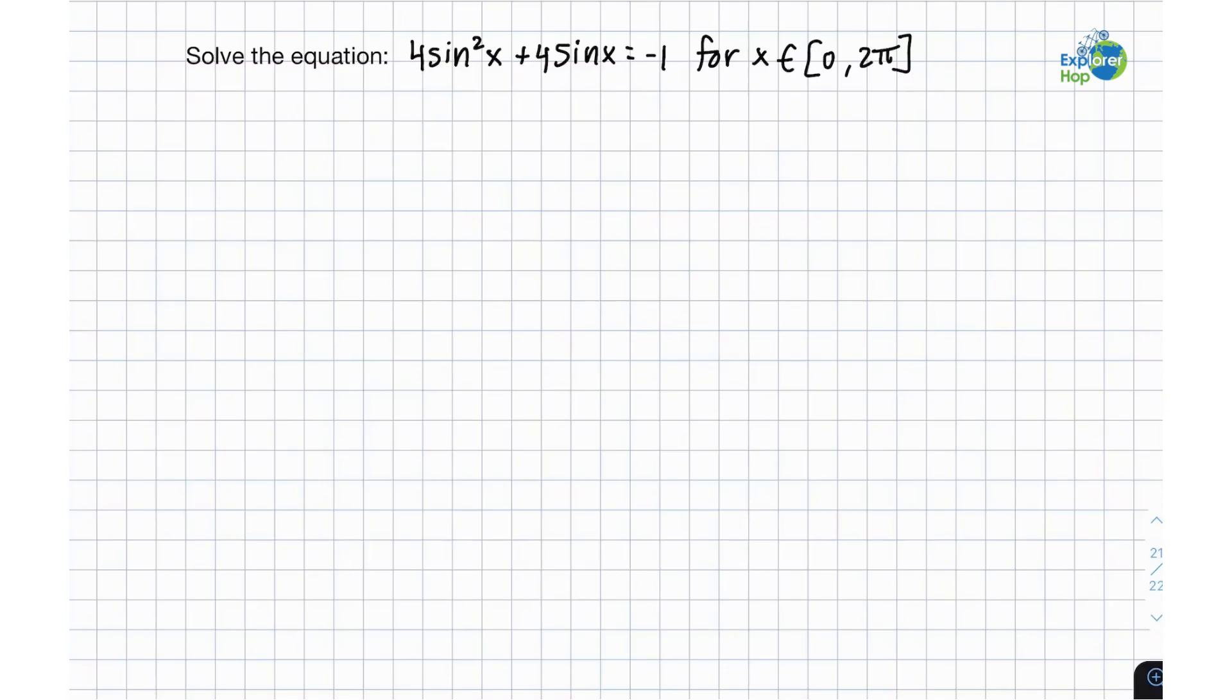Hello everybody and welcome to Explorer Hop. Today we're being asked to solve the equation 4 sine squared x plus 4 sine x equals negative 1 for x as a member of all x values from 0 to 2 pi.